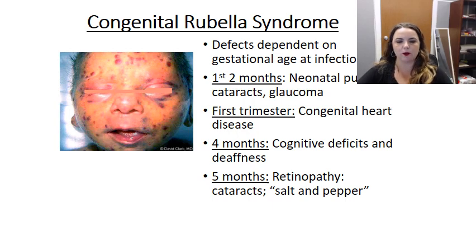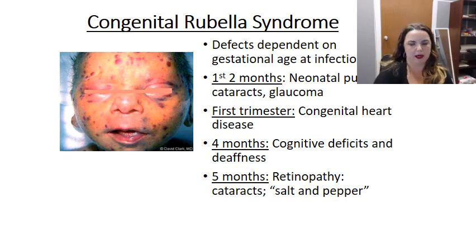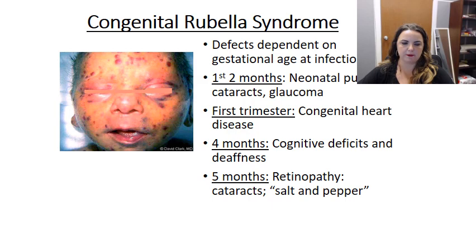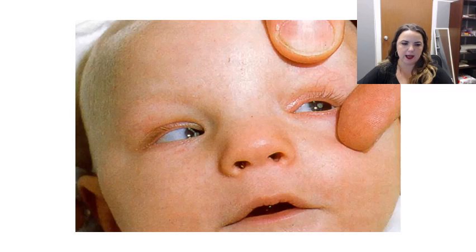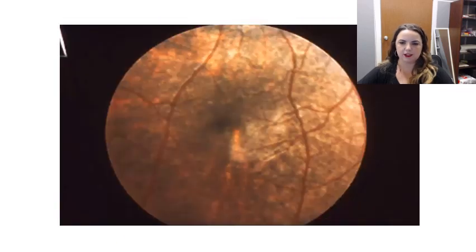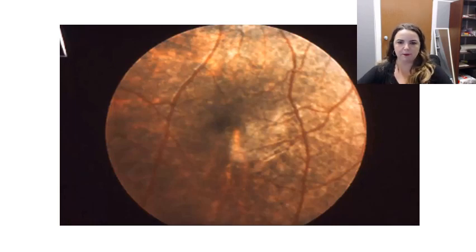However, one thing to point out: congenital cataracts are typically associated with rubella, less so with CMV — so keep that in mind. This image shows the cataract in a baby's eye. And if you look at the visual field, you can see this salt-and-pepper retinopathy at the back of the eye, which is associated with rubella. Unfortunately, it is not particularly treatable.